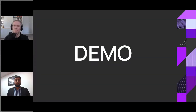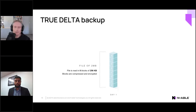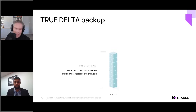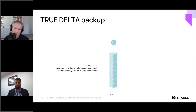Thanks Ray. Starting with the True Delta backup technology: without backup we back up exactly what you tell us to — 100% on the first backup — and every subsequent backup is a delta, meaning just the portions of files that actually changed. In this example, a 2MB file is broken into eight blocks of 256K each, compressed and processed, and changes are tracked from backup to backup using our journal system. On day two, working with an Excel document, blocks nine and ten replace two and eight — those changes are tracked in the journal.